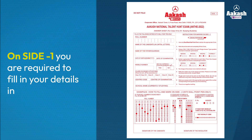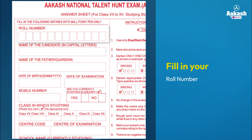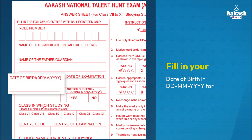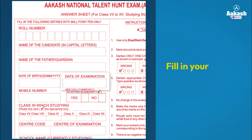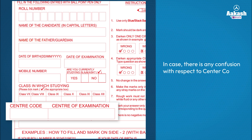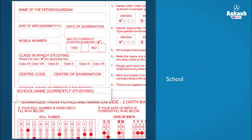On side one, you are required to fill in your details in capital letters. Fill in your roll number, name, name of father or guardian, date of birth in DDMMYYYY format, date of examination, mobile number, the class you are studying in, centre code, centre of examination. In case there is any confusion with respect to centre code or centre of examination, please contact your invigilator. And school name.